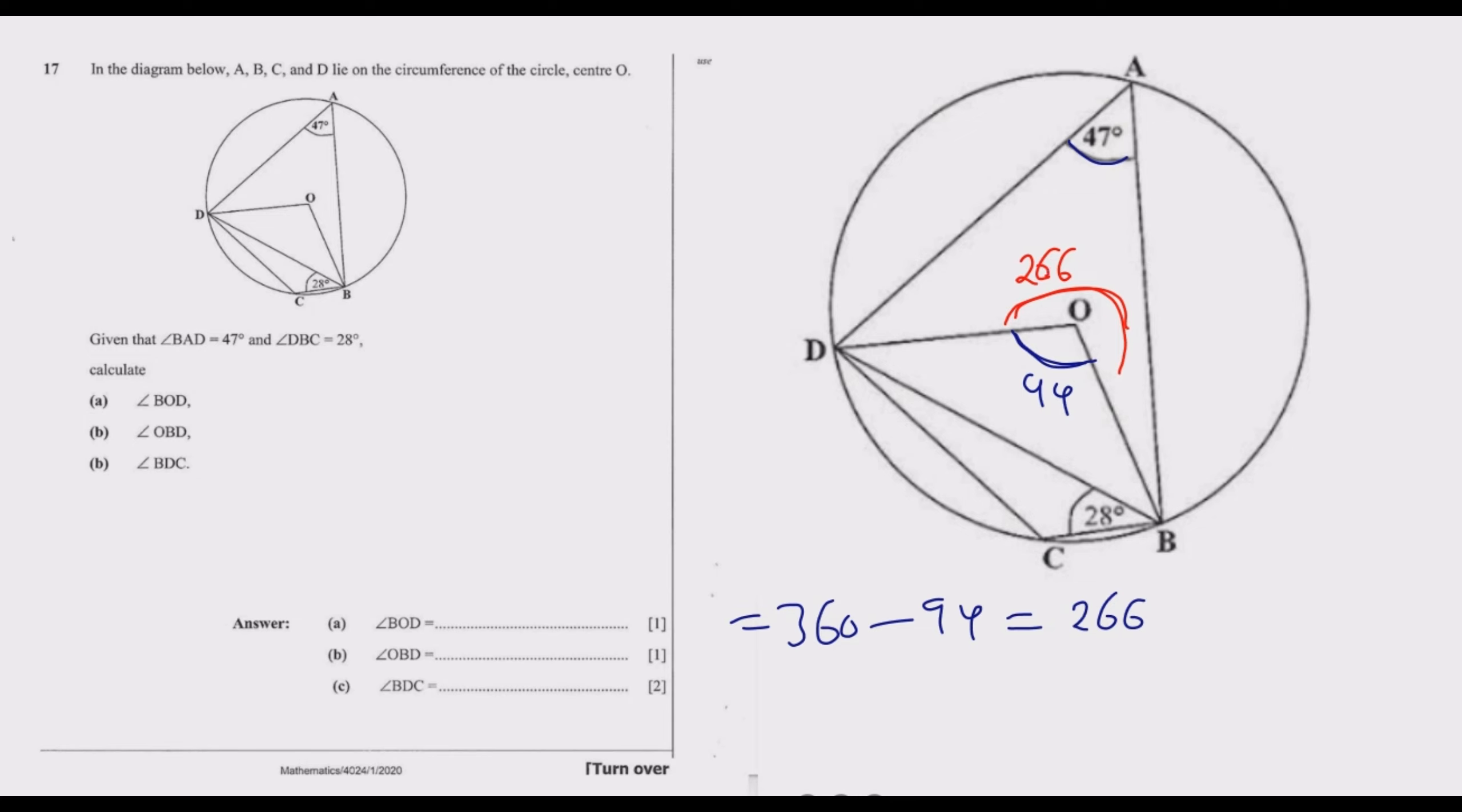If you know this angle is 266 degrees, you can use the same principle that the angle at the center is twice the angle at the circumference. This angle should be half of 266. Two into two is one, two into six is three, two into six is three, so 133 degrees.